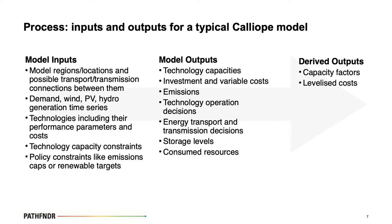Calliope takes all of this and turns it into a large optimization problem. It decides where to place technologies and gives us investment and variable costs for those technologies, plus emissions. It then decides how to operate these technologies on an hour-by-hour basis — or whatever time resolution we're using — how energy is transported from one location to another, storage levels, consumed resources, and so on. Additional outputs like capacity factors or levelized costs are derived after the model is solved.